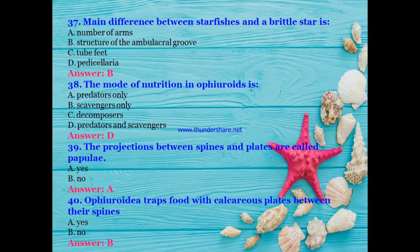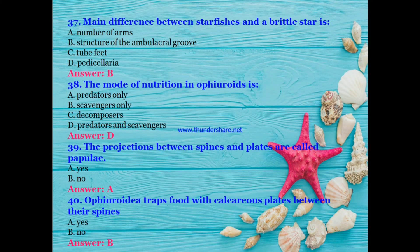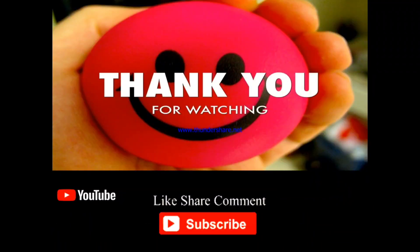What is the main difference between starfish and brittle stars — number of arms, structure of the ambulacral groove, tube feet, or pedicellariae? The answer is tube feet. The mode of nutrition in Ophiuroidea is: predators only, scavengers only, decomposers, or predators and scavengers? The answer is D — predators and scavengers. The projections between spines and plates are called papulae — yes. Does Ophiuroidea trap food with calcareous plates between their spines? No.